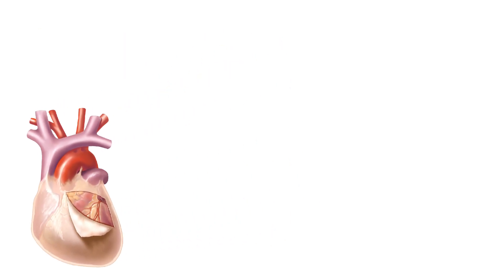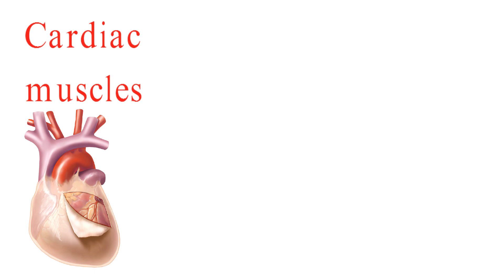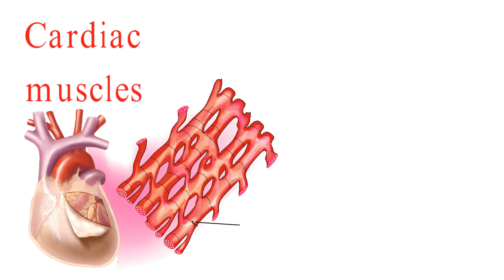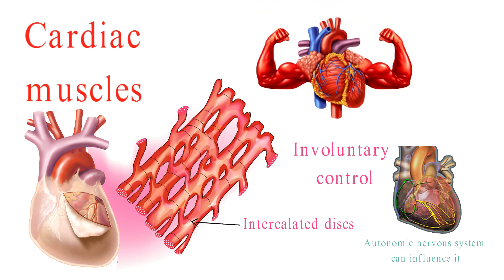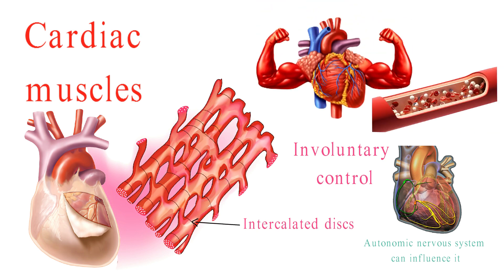And finally, cardiac muscle tissue. This specialized muscle is exclusively found in the heart. It's striated, similar to skeletal muscle, but with a distinctive branching pattern and intercalated discs. Cardiac muscle is also involuntary, but it has its own electrical conduction system that regulates the heartbeat. The autonomic nervous system can influence it. The cardiac muscle's primary job is to keep our hearts beating, ensuring blood is pumped throughout our bodies to supply oxygen.